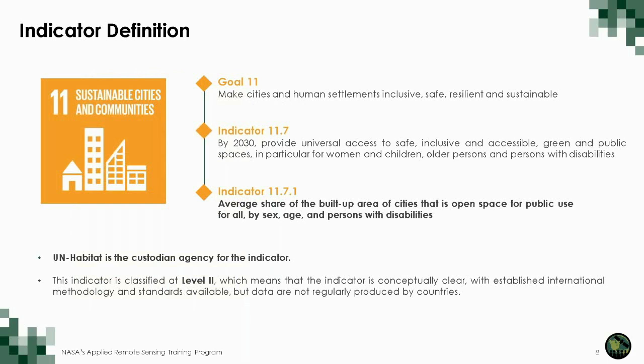Which is this indicator? Indicator 11.7.1 is the average share of built-up areas of cities that is open space, disaggregated by sex, age, and persons with disabilities. This indicator is related with Goal 11, which is sustainable cities and communities. The custodian agency for this indicator is UN-Habitat.